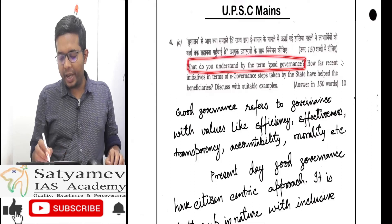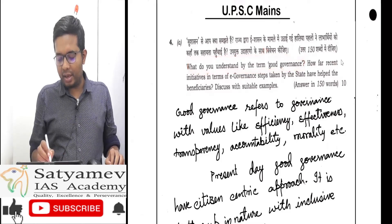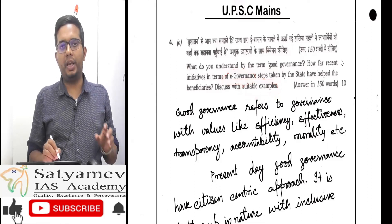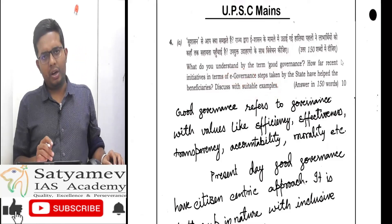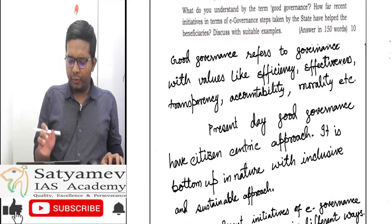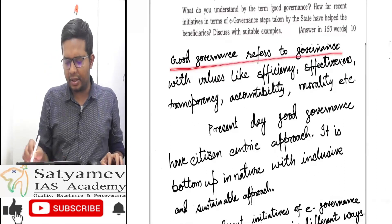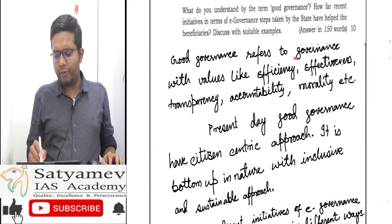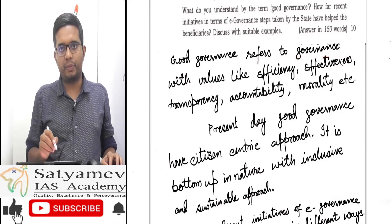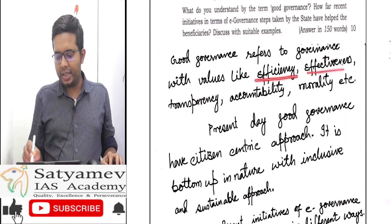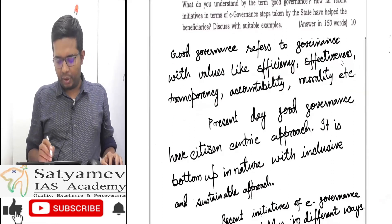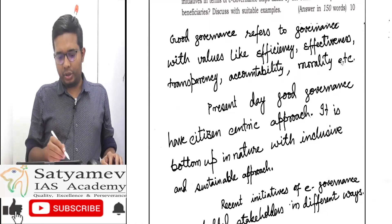Good governance has to be explained with examples, including e-governance benefits as well as e-governance loopholes. The first question is directly answered here — this itself will serve as the introduction. Good governance refers to governance with values like efficiency, effectiveness, transparency, accountability, and morality.